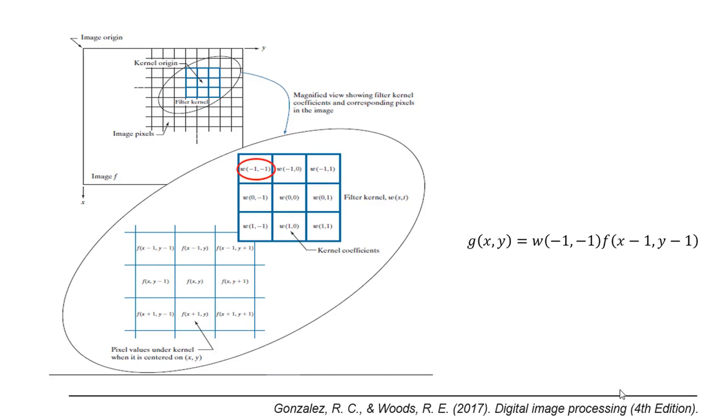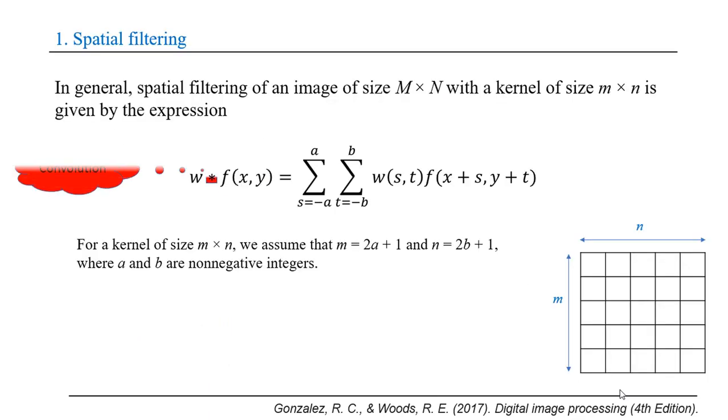Here we multiply the first element of the kernel by the first element of the image part under the kernel, and the second element of the kernel by the second element of the image, and so on. This operation is called convolution and we can write it by this expression.